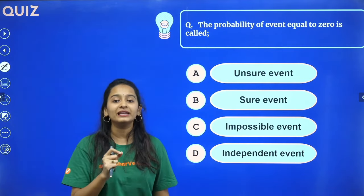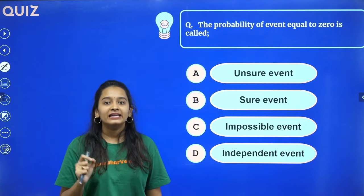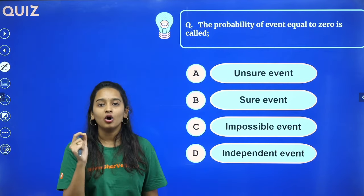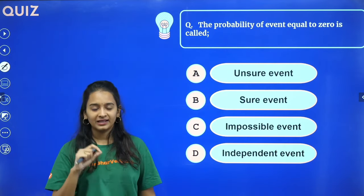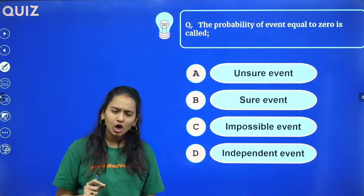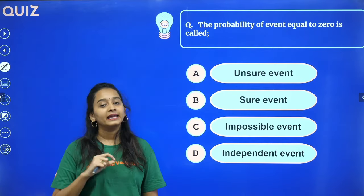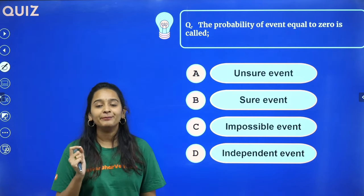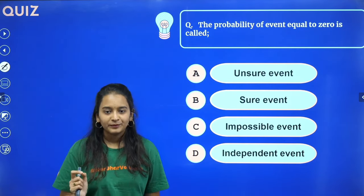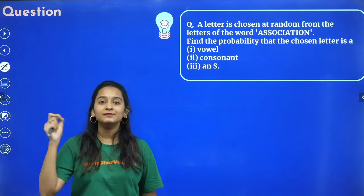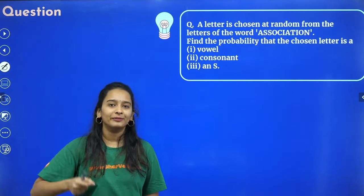Quick quiz: the probability of an event equal to 0 is called — A: unsure event, B: sure event, C: impossible event, D: independent event. Let me know the correct option in the comment section.